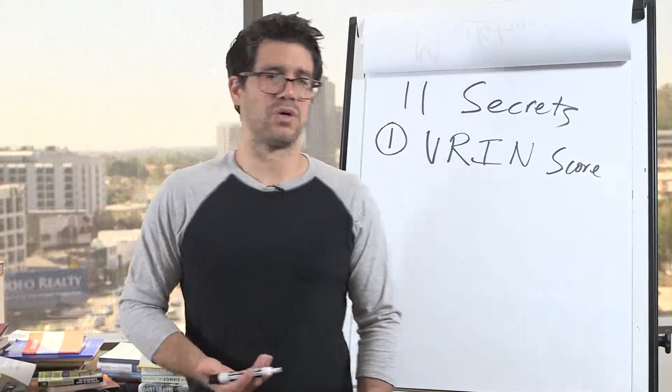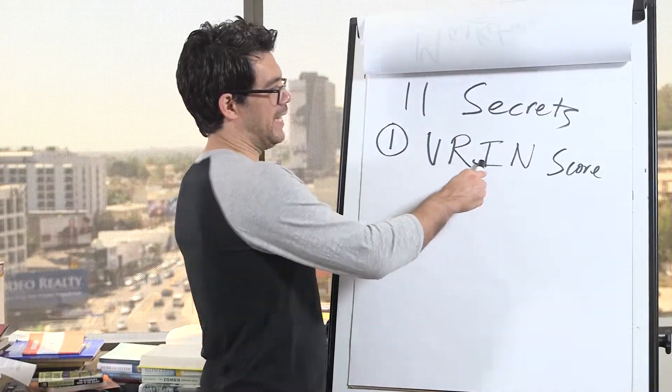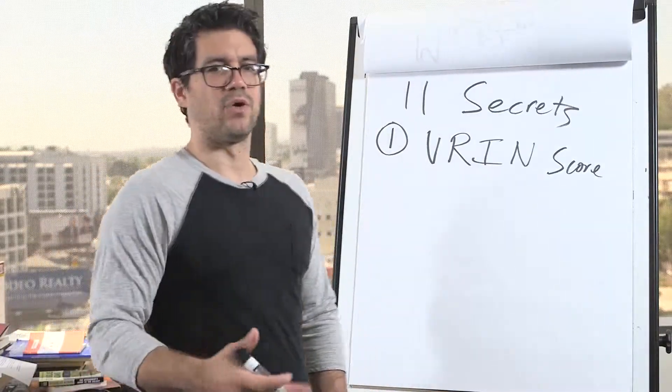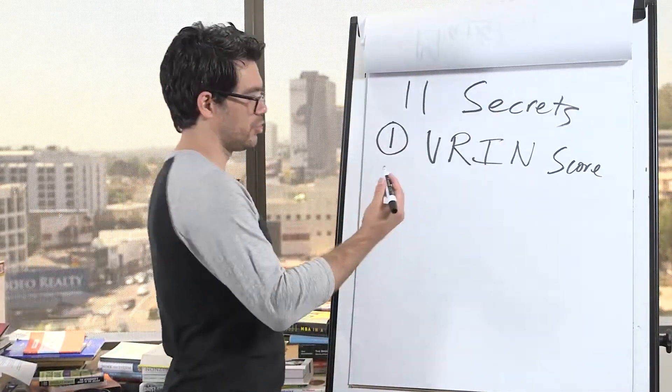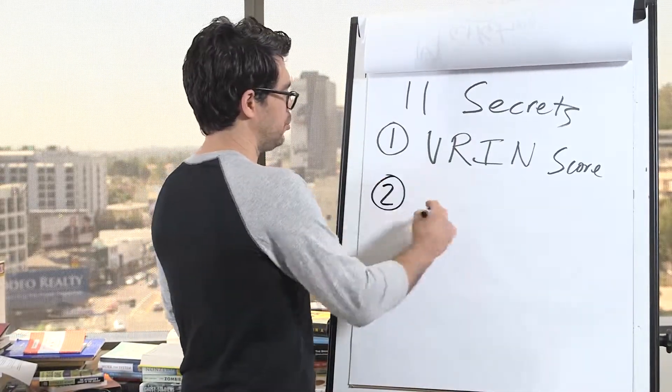And this VRIN score is something that I didn't learn until I was in my 20s. But once I knew it, it made all the difference in the world. And so you got to know your VRIN score, which is basically value, rare, inimitability, and non-substitution. I don't know if I'm going to explain all those, but I want to just give you the high level and then I'll show you how you can learn all of them if you want to know.